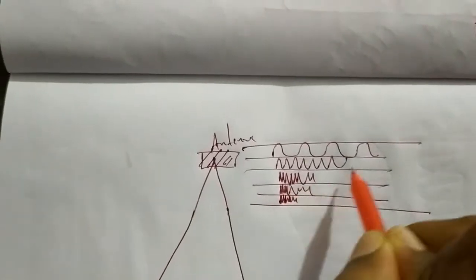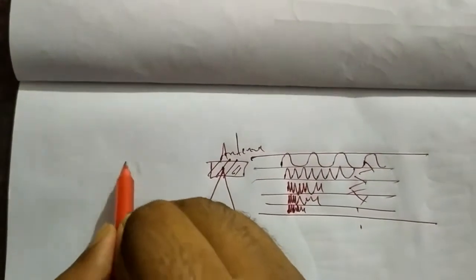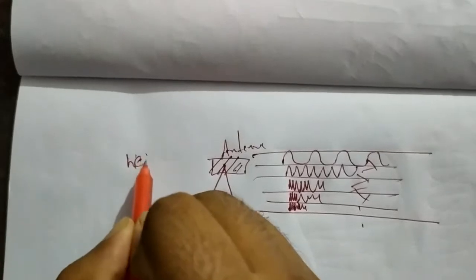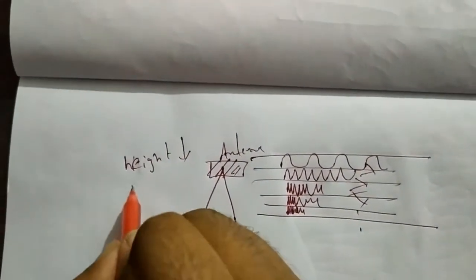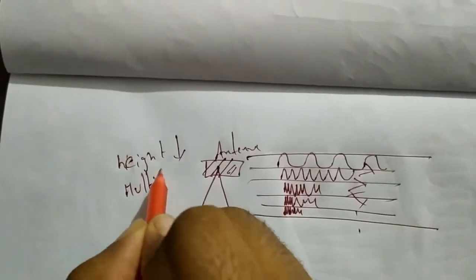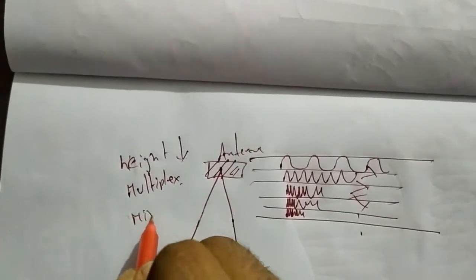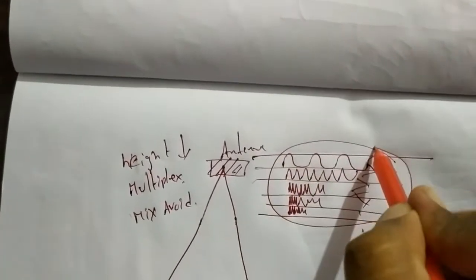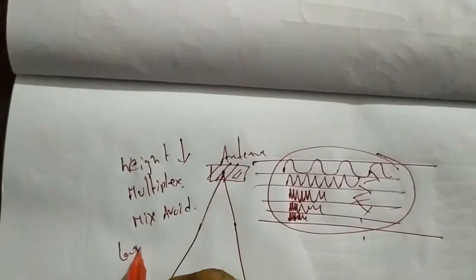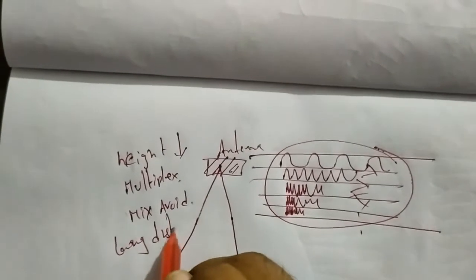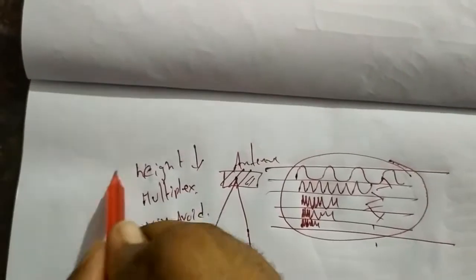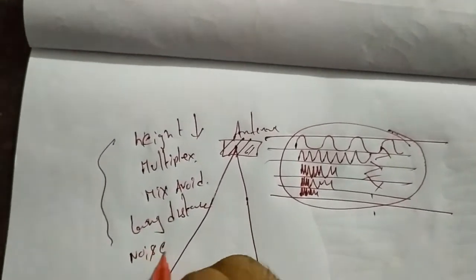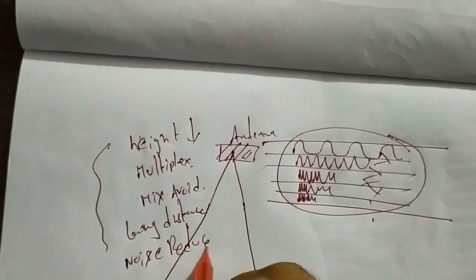To summarize, modulation provides these key benefits: antenna height reduction, multiplexing possibility, avoiding mixing of signals, high-frequency easy radiation for long-distance travel, and noise reduction. These are the five main reasons we need modulation in communication systems. Thank you guys.